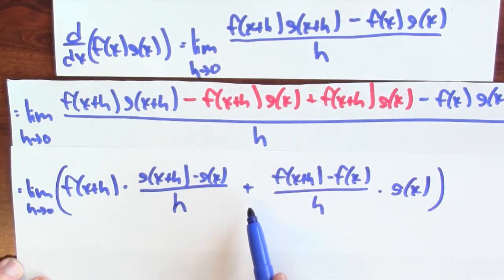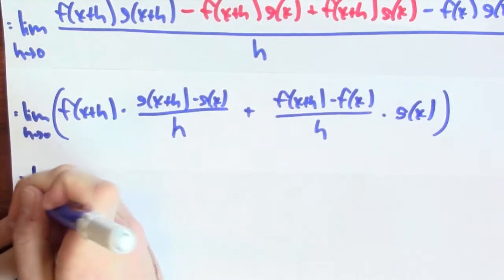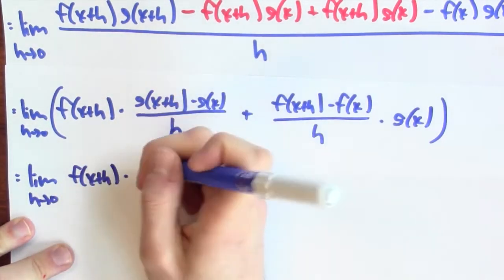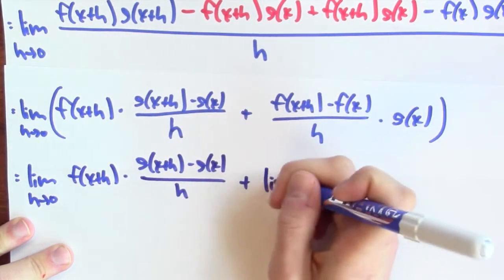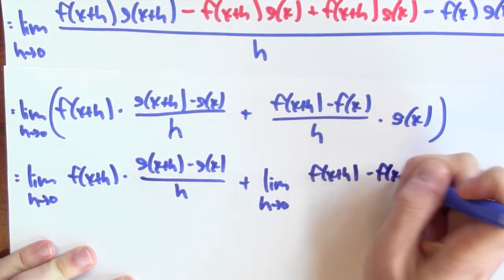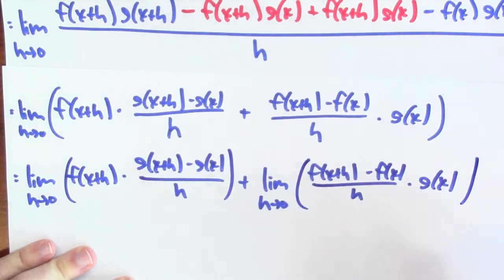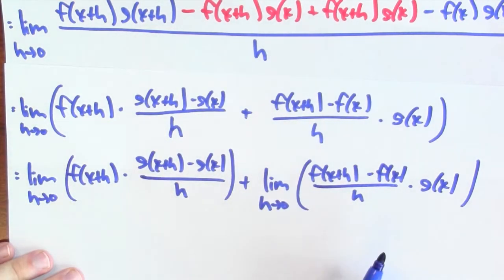This limit is the same as what we had. Now this is a limit of a sum, so that's the sum of the limits provided the limits exist — and we'll see that they do. So this becomes the limit as h goes to 0 of f(x+h)·[g(x+h) minus g(x)]/h, plus the limit as h goes to 0 of [f(x+h) minus f(x)]/h times g(x).